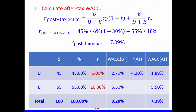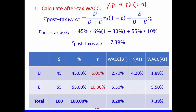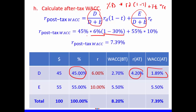Now we calculate the after-tax WACC, or post-tax WACC. The formula is: percentage of debt times cost of debt times (1 minus tax rate), plus percentage of equity times cost of equity. Note that cost of debt times (1 − T) is the after-tax cost of debt. So we take 45% multiplied by the after-tax cost of debt, which is 4.2%, giving us 1.89%.